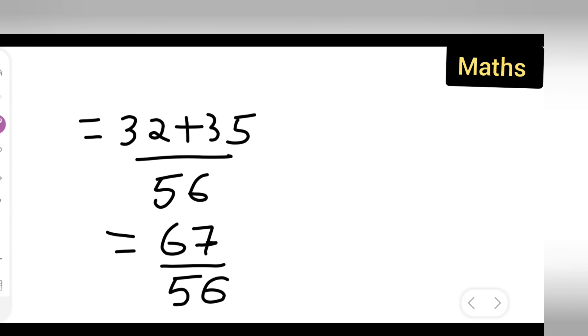So I hope y'all have understood how to find the sum of 4 upon 7 and 5 upon 8. And here, especially when the denominator is different. I hope y'all have understood and thanks for watching.